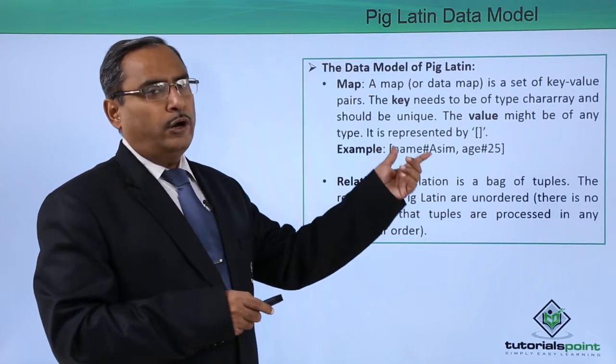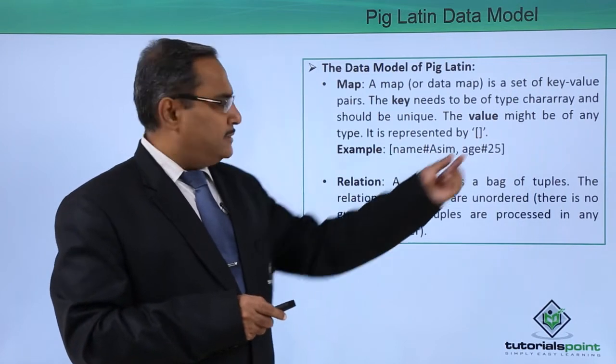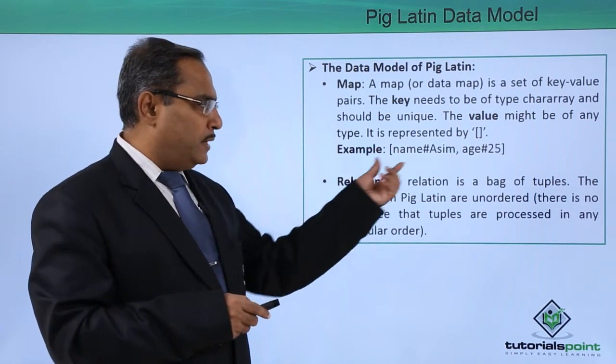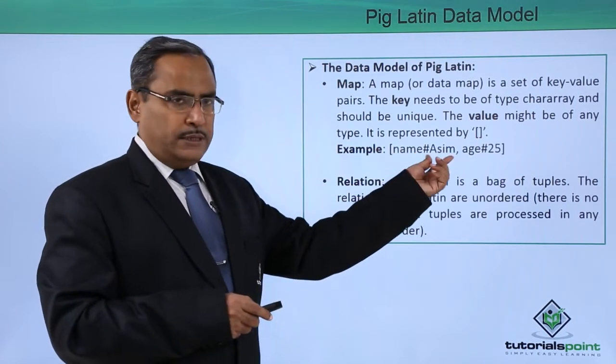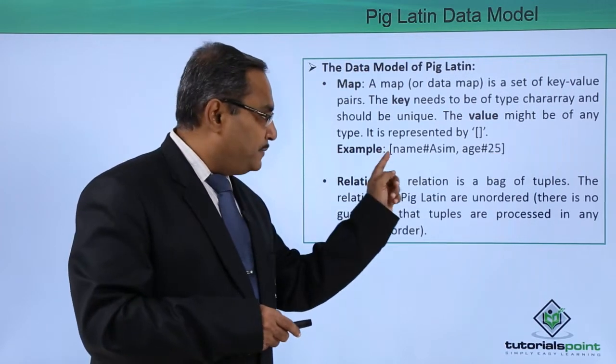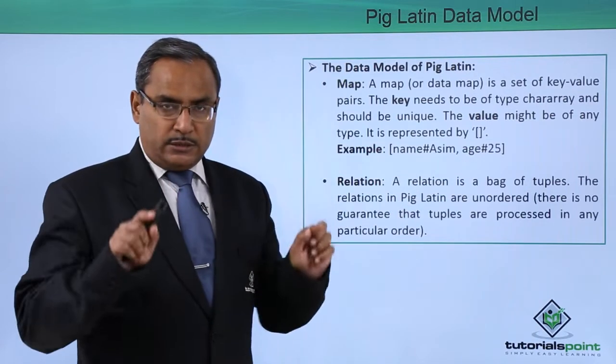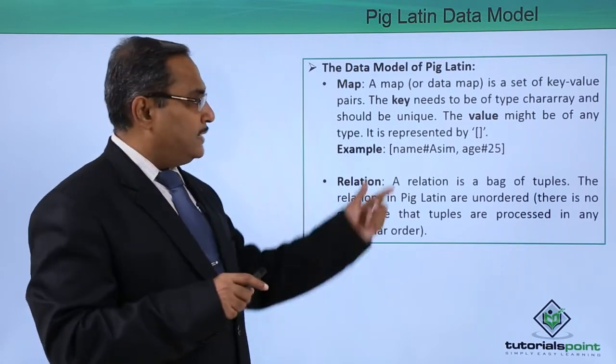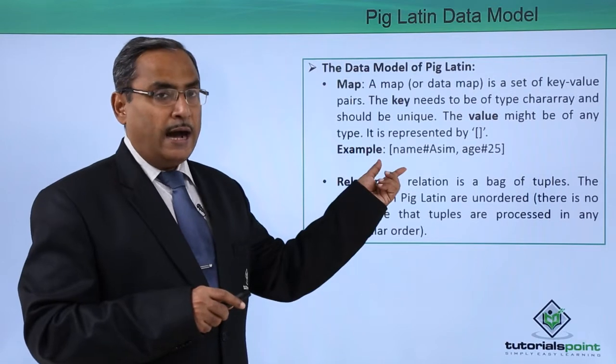It should be represented within square brackets. You can find that as an example, name number Asim and age number 25 has been enclosed within square brackets. That means it is representing a map here.